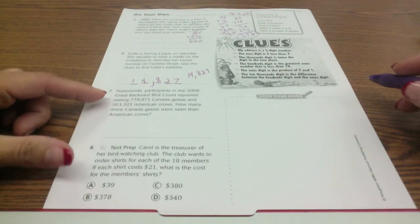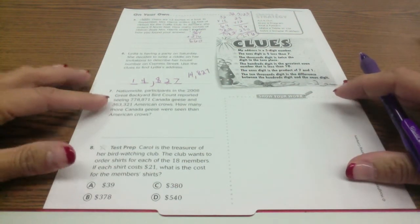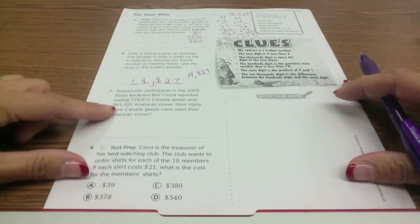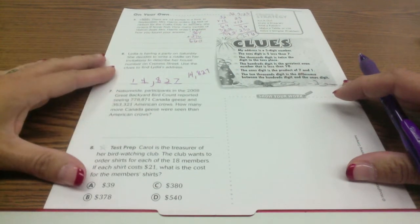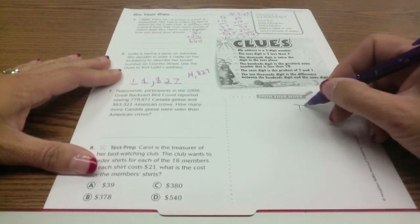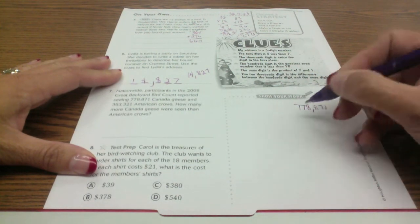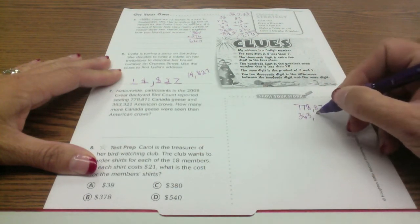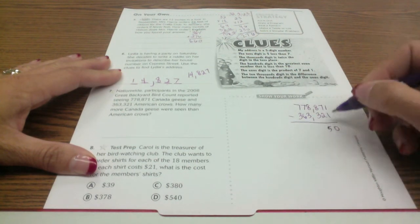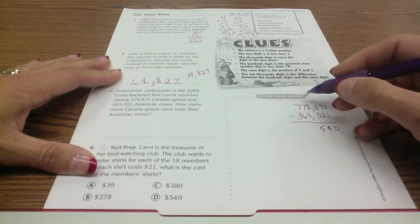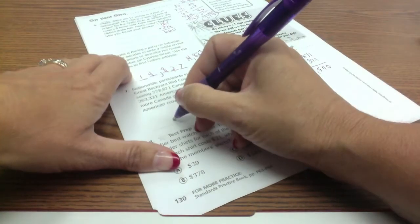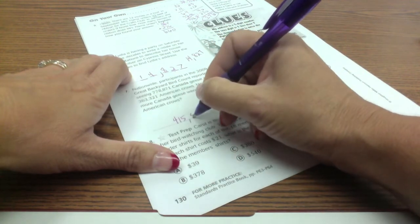Nationwide participants in the 2008 Great Backyard Bird Count reported seeing 778,871 Canada geese and 363,321 American crows. How many more Canada geese were seen than American crows? Most of you did this one okay because it's subtracting. Make sure you're lining up your place values. So we're going to subtract. 1 minus 1 is 0, 7 minus 2 is 5, 8 minus 3 is 5, 8 minus 3 again is 5, 7 minus 6 is 1, and 7 minus 3 is 4. So it should be 415,550.